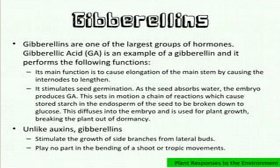The next hormone is gibberellins. Remember, auxins and gibberellins are both responsible for promoting growth. Gibberellins promote stem elongation, stimulate cell division, play a role in the germination of seeds — in order for seeds to grow, it is because of gibberellins. They control cell enlargement, promote the development of plant flowers and fruit, and are known to promote the development of seedless fruit. Gibberellins also stimulate the growth of side branches.